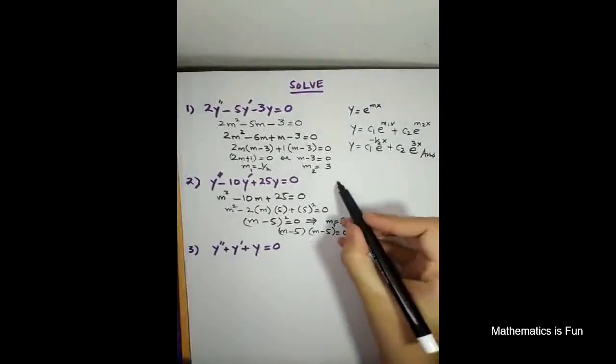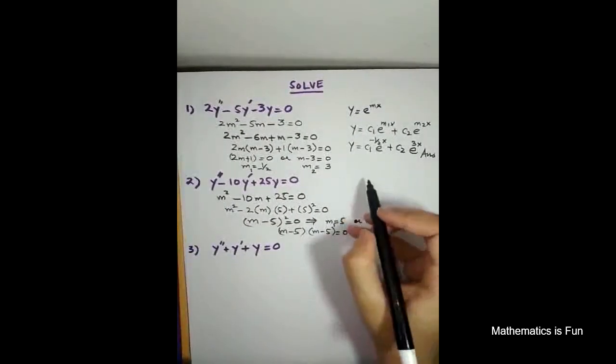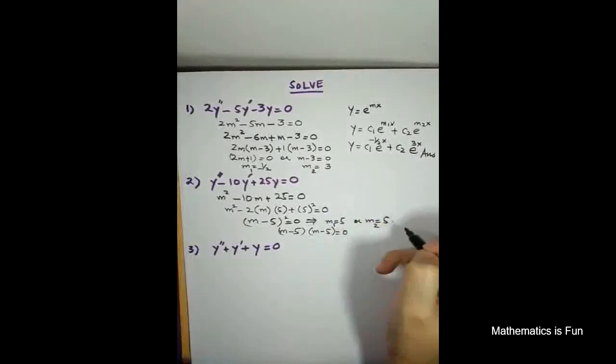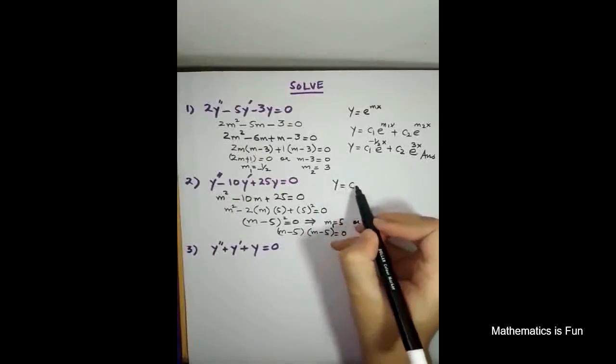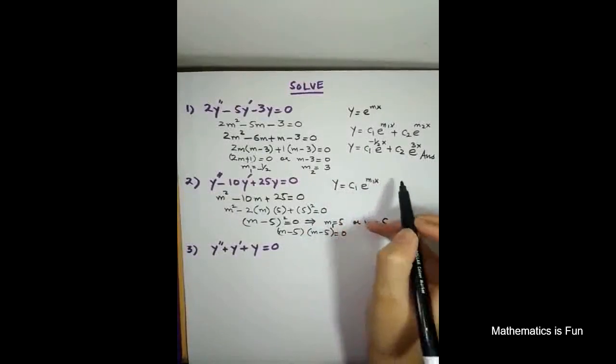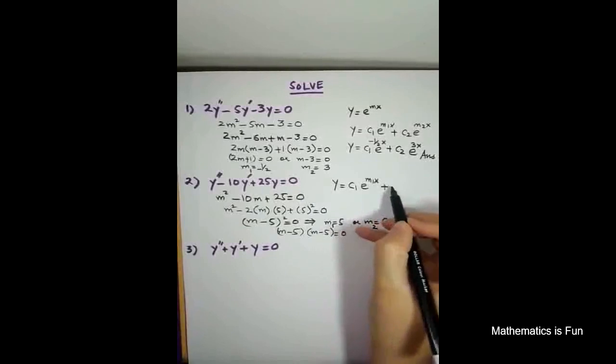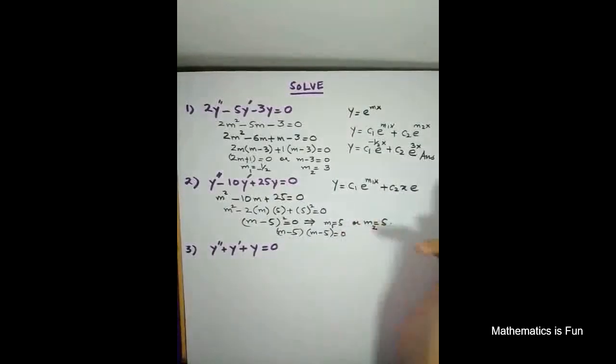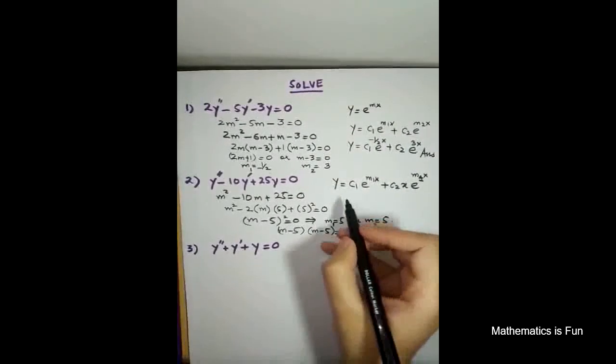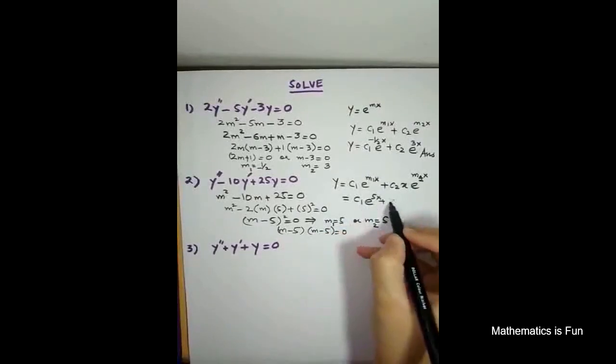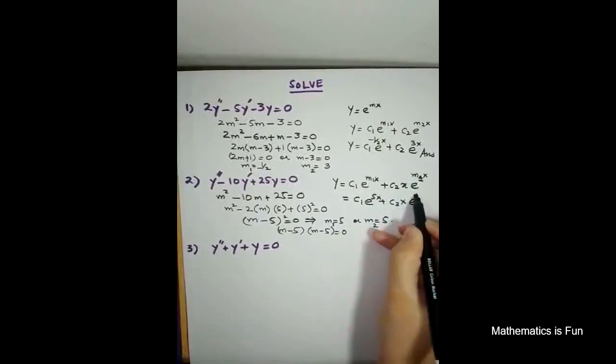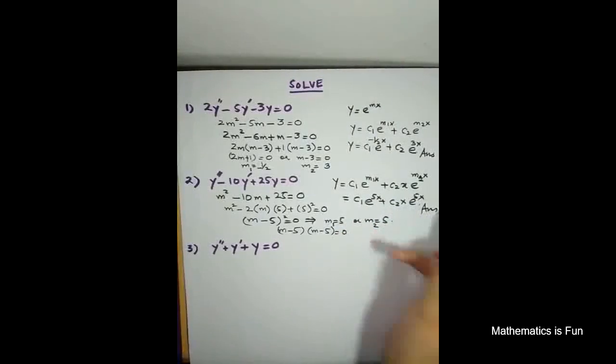So it falls in the category of second case. And that second case is m1 equals to m2, repeated real roots. So general solution is of the type y equals to c1 e to the power m1x because m1 m2 is same, plus c2 x e to the power m1x. You just have to replace m1. That is c1 e to the power 5x plus c2 x e to the power 5x. That is the solution. Very easy.